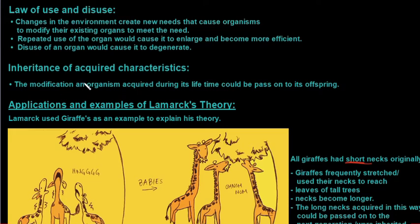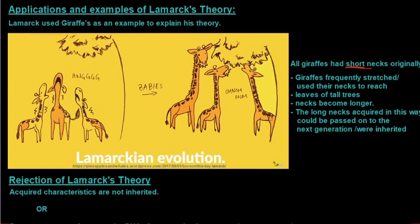And then the inheritance of acquired characteristics: the modification an organism acquired during its lifetime could then be passed on to its offspring. Now Lamarck used giraffes to explain his theory, and this is quite funny because Lamarck had never seen giraffes in the wild.